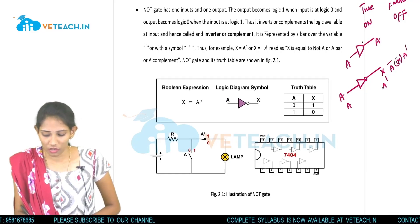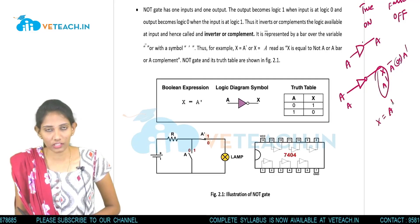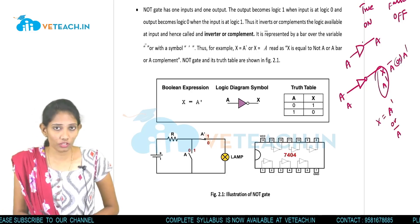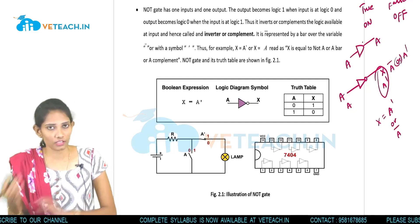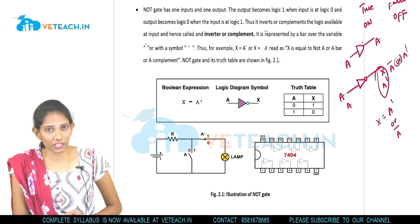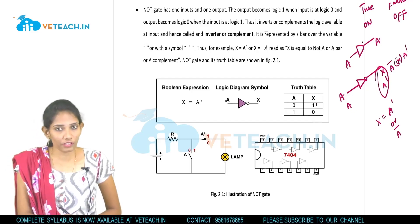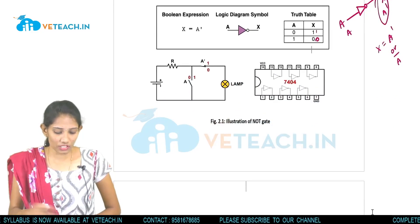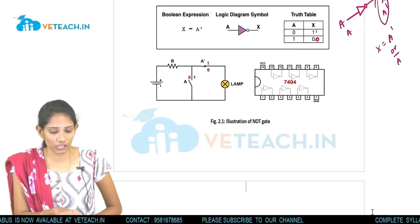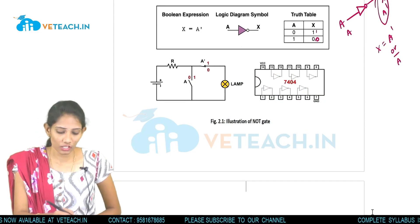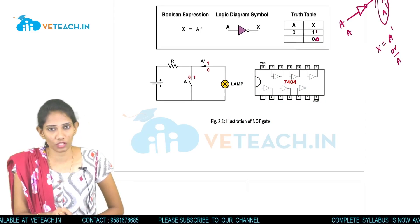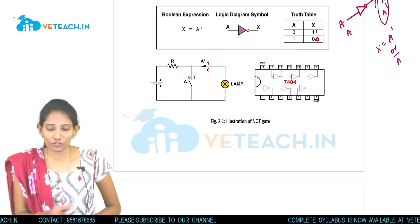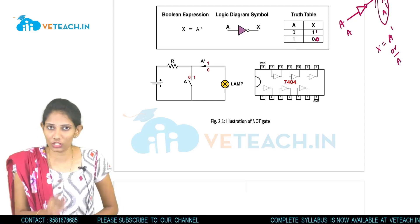The boolean expression for the NOT gate is X equals A bar. In the truth table: when we apply 0 we get 1 as output, and when we apply 1 we get 0 as output — it is simply inverted. In the exam you have to write only the logic symbol, boolean expression, and the truth table. For the NOT gate we use the 7404 IC.